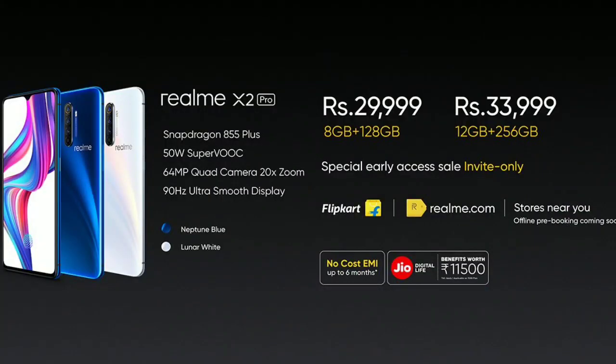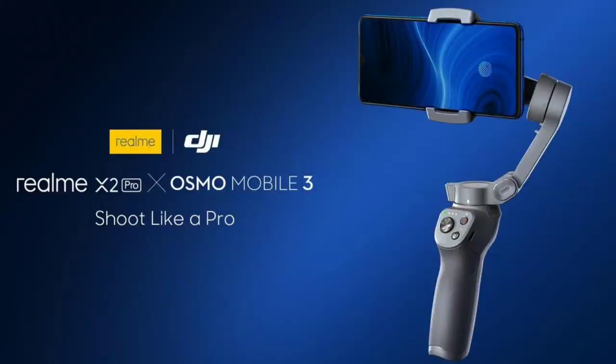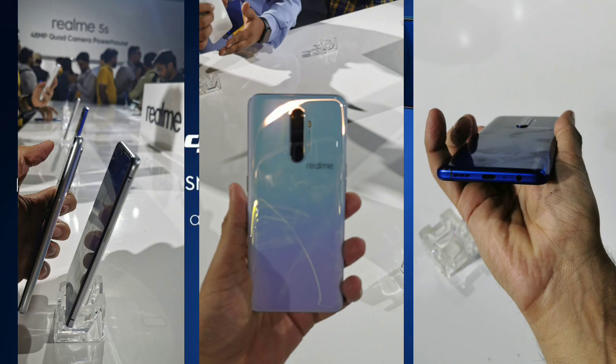To summarize: we covered Realme X2 Pro and Realme 5s complete specifications. The X2 Pro has UFS 3.0 storage, a Type-C port, 50W SuperVOOC charging, a 90Hz AMOLED display, and a 64MP camera. I was expecting the X2 Pro to be priced around 25,000 rupees, but the 30,000 rupees price point is quite high.